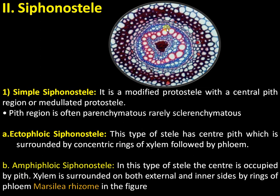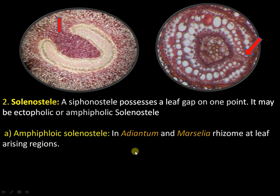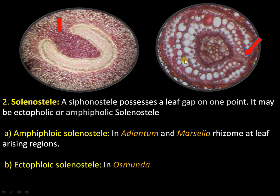The second type is the amphiphloic siphonostele. 'Amphi' means on both sides — here phloem is present on both sides of the xylem ring. This is present in Marsilea rhizome. The solanostele is like a siphonostele with a leaf gap at one point, and like the siphonostele it can be ectophloic or amphiphloic. Amphiphloic siphonostele is present in Adiantum and Marsilea rhizome at leaf-arising regions, whereas ectophloic siphonostele is present in Osmunda.